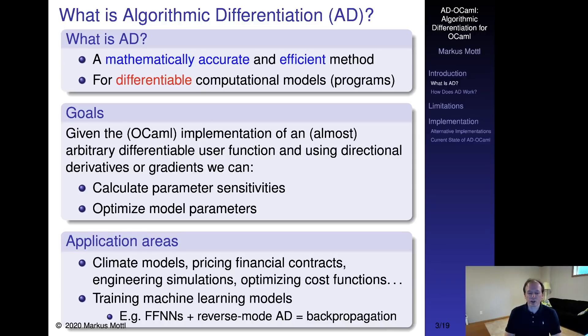The application areas of AD obviously cover many scientific disciplines where parameter optimization or sensitivity analysis are important. AD also generalizes previously discovered computational techniques. For example, the famous backpropagation algorithm in machine learning is just a special case of reverse-mode algorithmic differentiation applied to feed-forward neural networks.